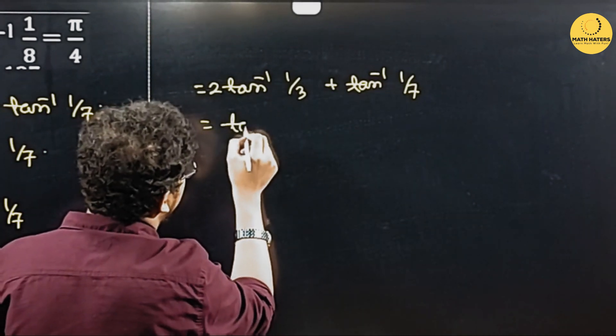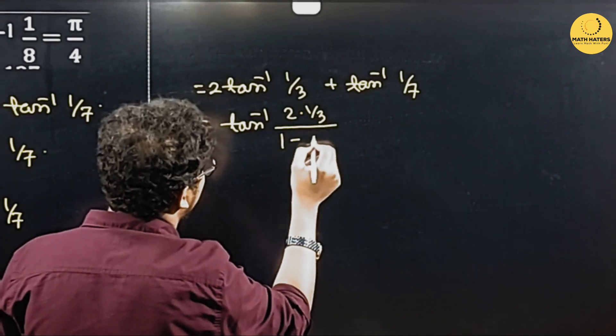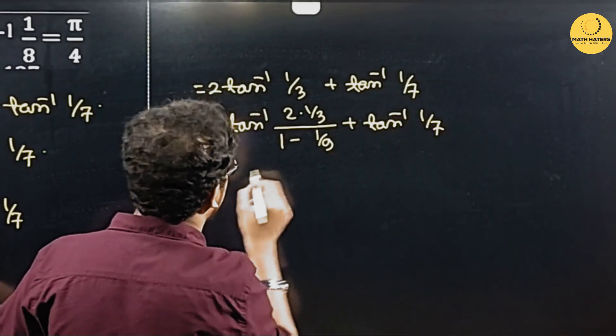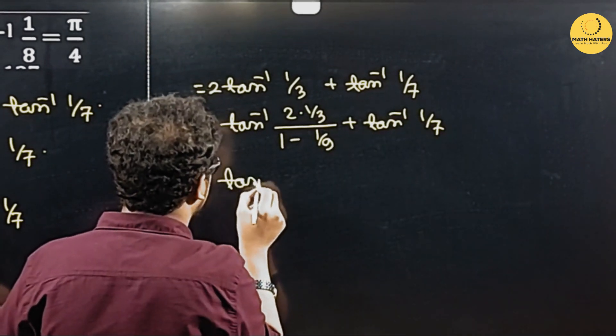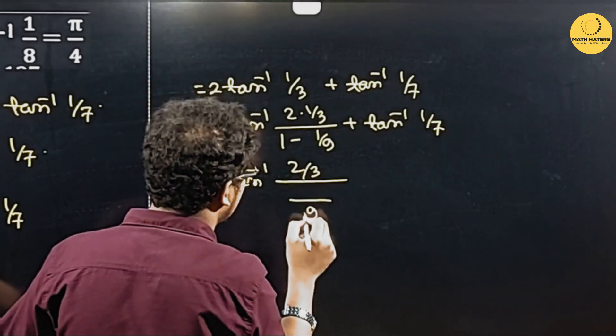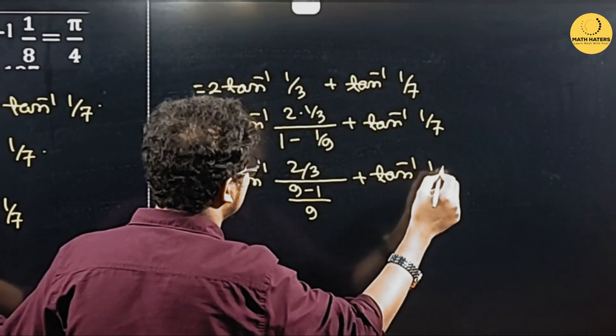Two tan inverse x, that is tan inverse two x divided by one minus x square plus tan inverse one by seven. So we have to write two by three divided by nine minus one plus tan inverse one by seven.